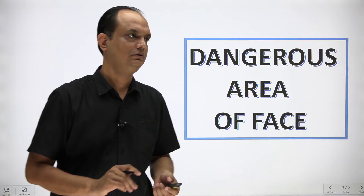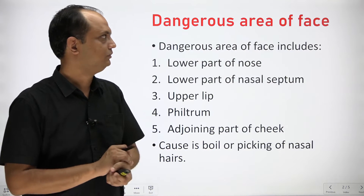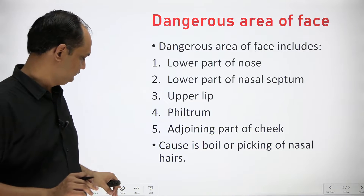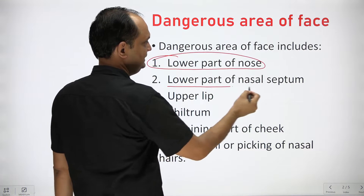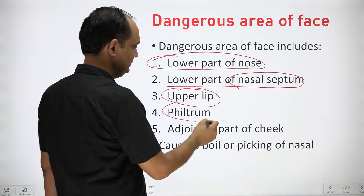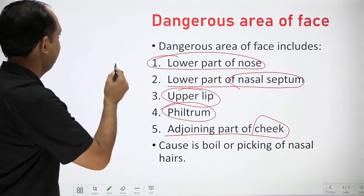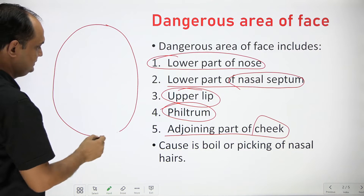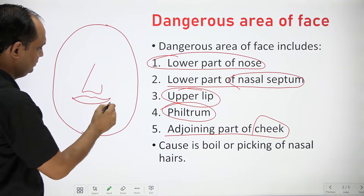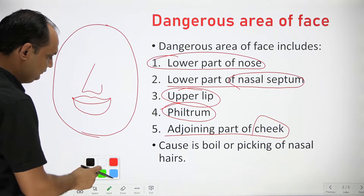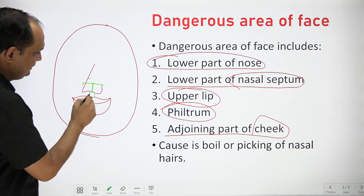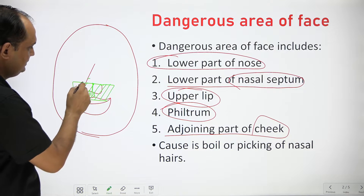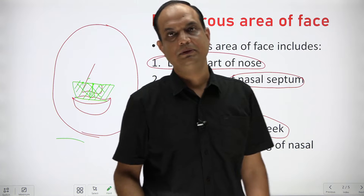Today we will discuss about the dangerous area of the face — this is a very commonly asked short note in exams. The dangerous area of the face includes the lower part of the nose, lower part of the nasal septum, the upper lip, the philtrum, and the adjoining part of the cheek. This entire portion — from the lower nose and nasal septum down to the upper lip with adjacent cheek — is known as the dangerous area of the face.